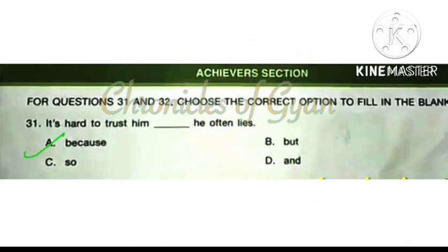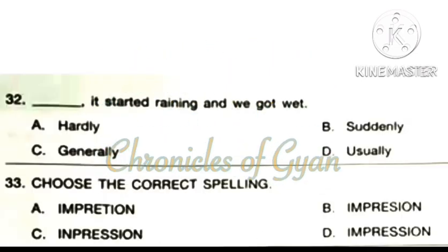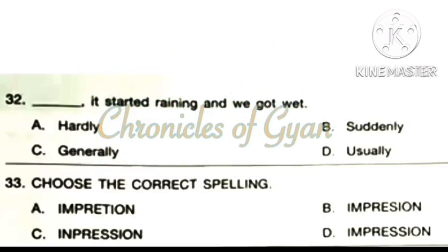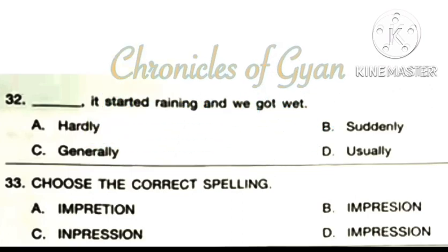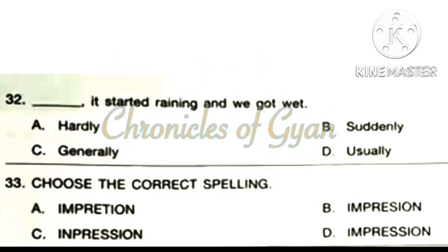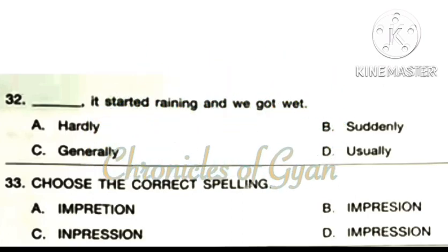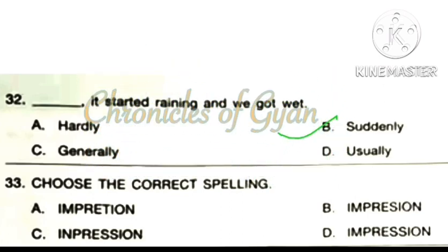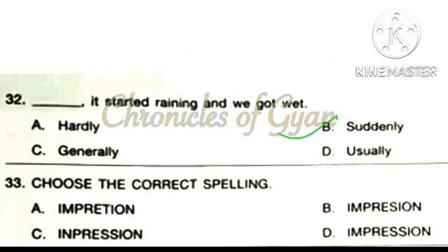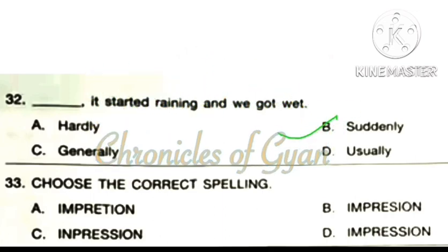Question 32: Dash, it started raining and we got wet. The correct answer is option B: Suddenly. Suddenly it started raining and we got wet.